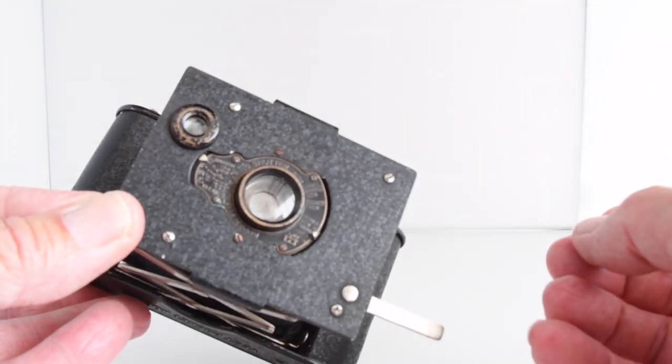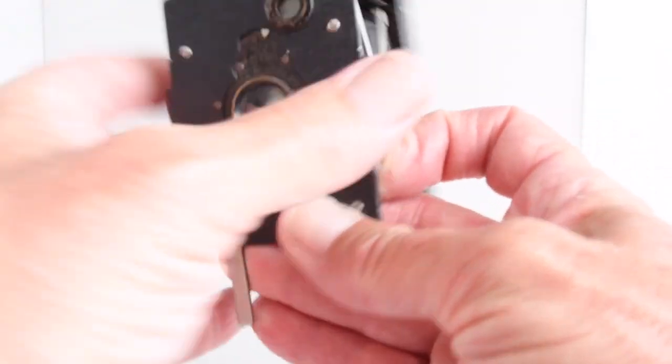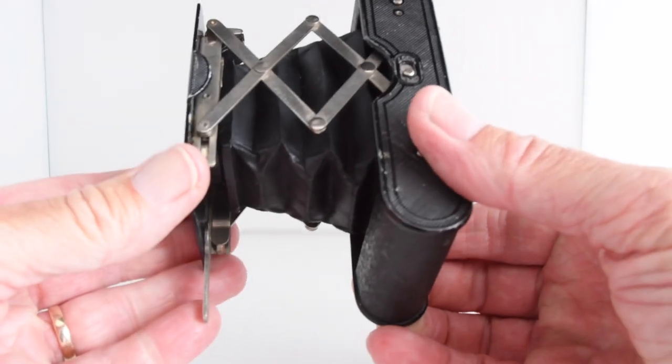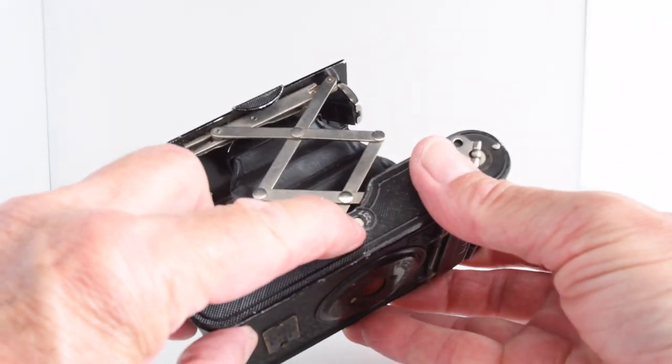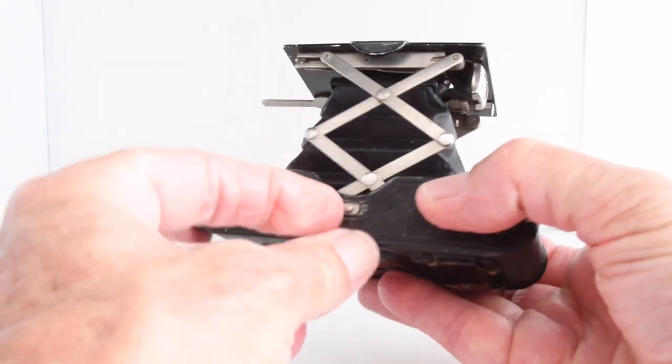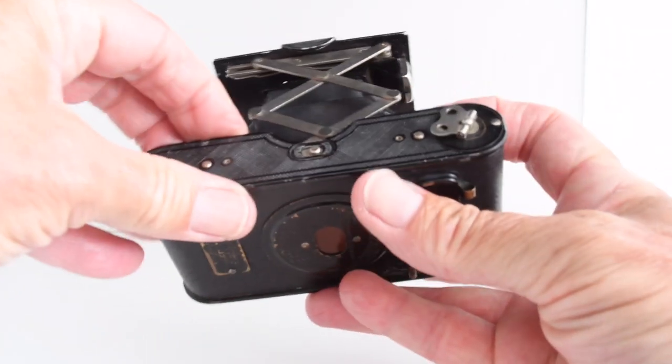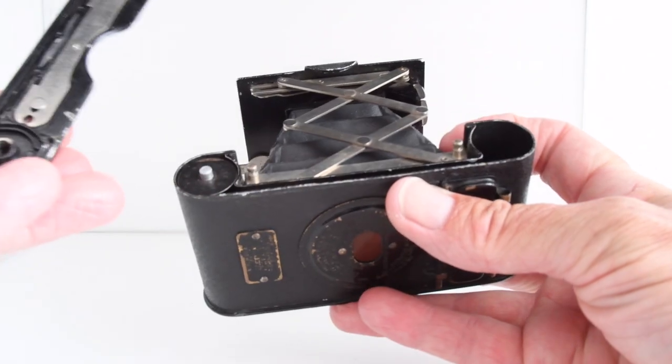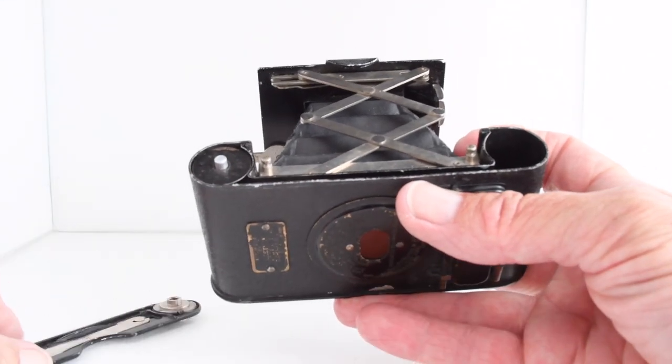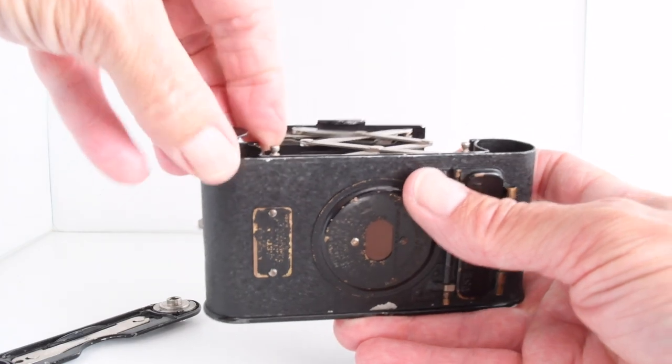So how do we load the film in? Well, there's a little lock button here which we can slide open, and that allows us to slide it the other way to take the top off, and then we can take our cartridge.